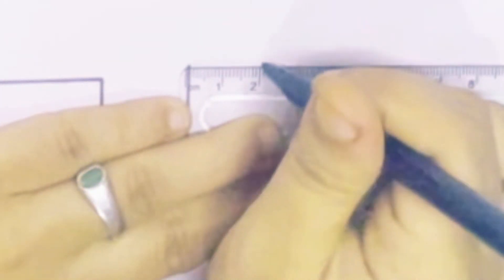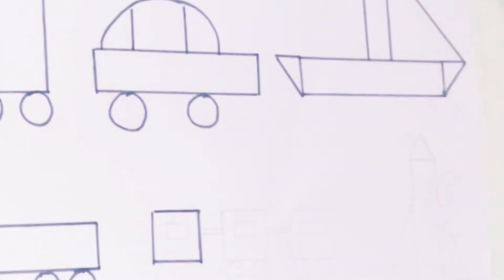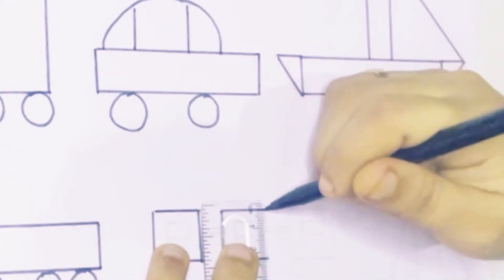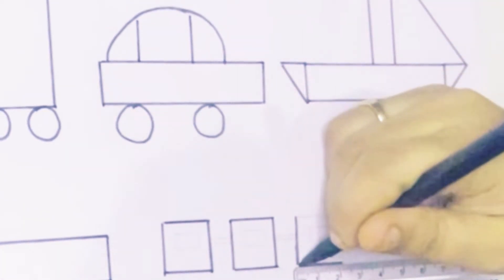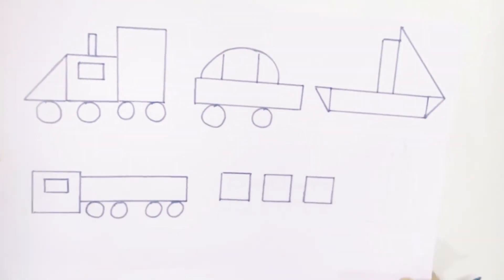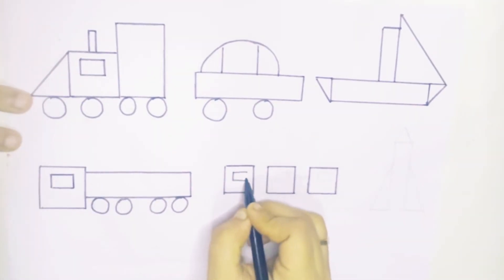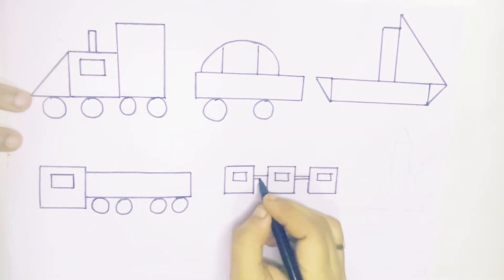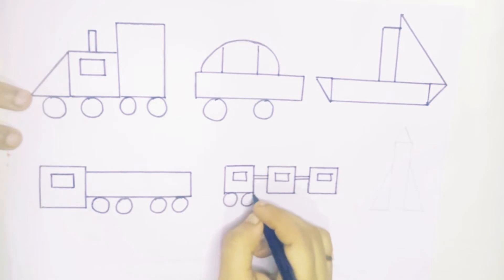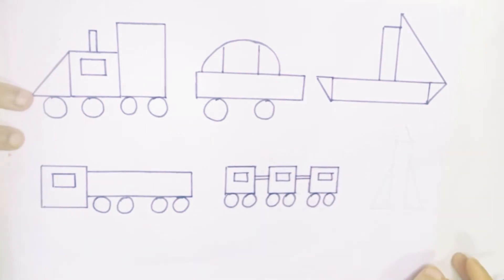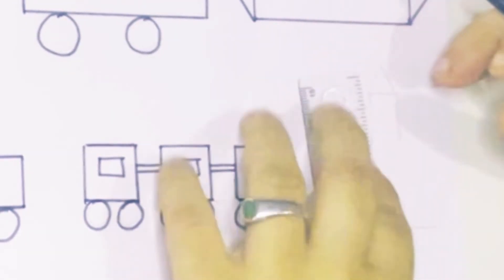Now we are going to draw a train. Draw a circle shape for wheels. Draw three squares — connecting the squares together. Then add a circle shape for wheels.